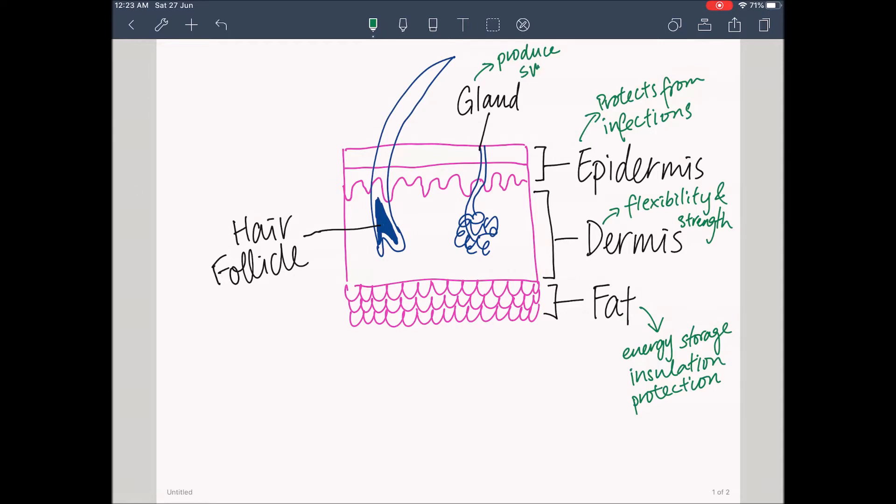Inside the dermis, there are glands that produce sweat and hair follicles, which enhance sensation. And in other mammals, it regulates body temperature as well.